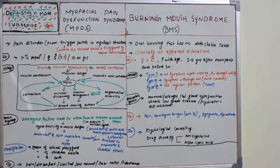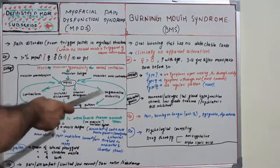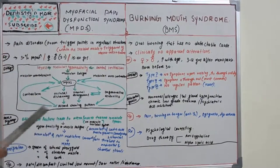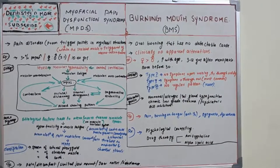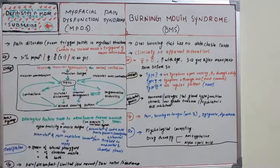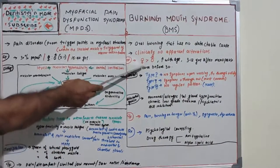The tongue is the most affected part, followed by the lips and palate. It is a problem seen in the oral cavity, especially tongue, lips, and palate, without any detectable cause. Clinically, no apparent alterations are present in the patient's mouth. Epidemiologically, it is most commonly seen among women — with a 6:1 female-to-male predilection.